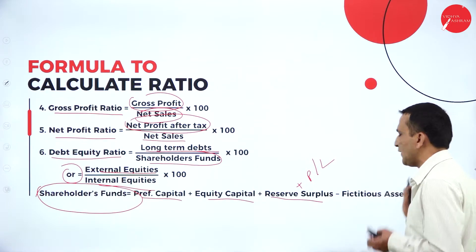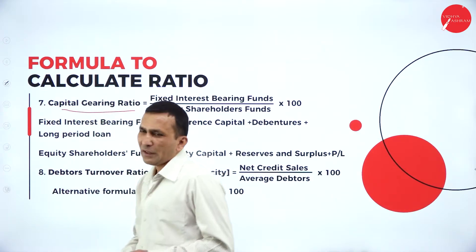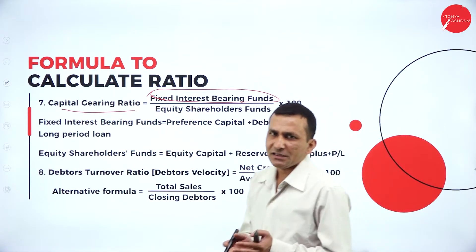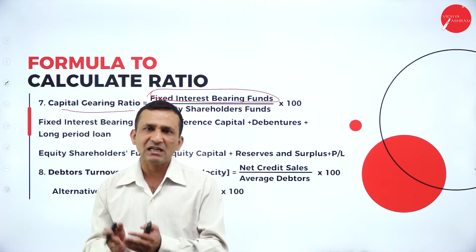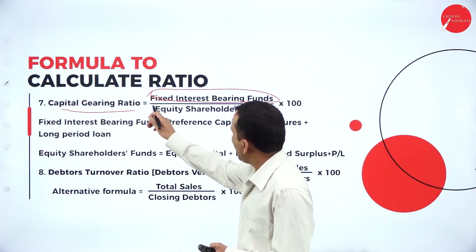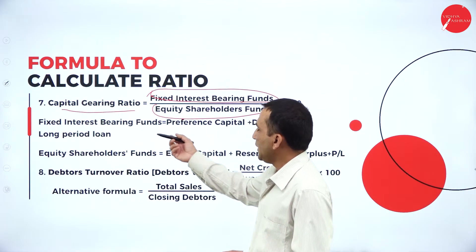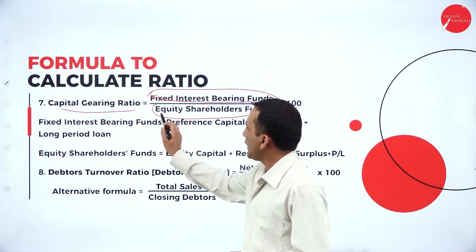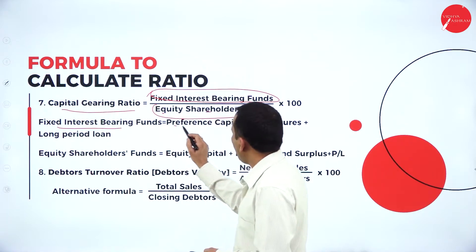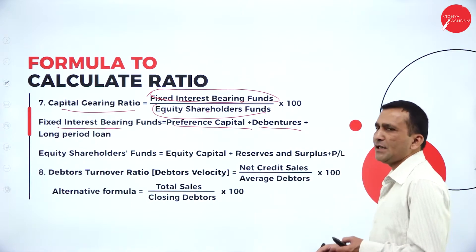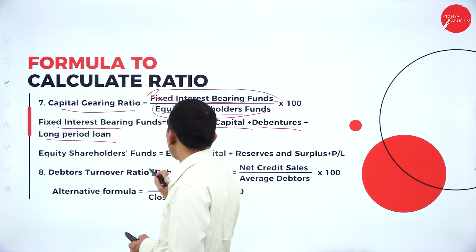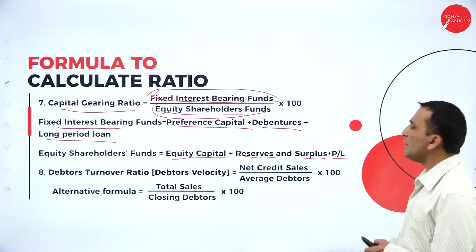Moving to capital gearing ratio, which is related to fixed interest bearing securities. For example, 9% preference shares and 12% debentures are fixed interest bearing. The numerator includes preference share capital and long-term loan. Equity shareholders' fund is equity share capital plus reserves plus surplus plus profit and loss account.